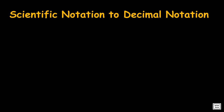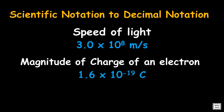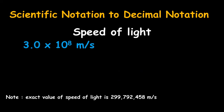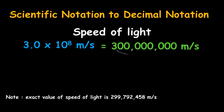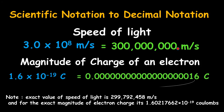Let's try to convert these from scientific notation to decimal notation — the speed of light in vacuum and the magnitude of the charge of the electron. For the speed of light in vacuum, notice that the exponent is positive 8. This means we have to move the decimal point 8 places to the right. For the magnitude of charge of an electron, notice that the exponent is negative 19. This means we have to move the decimal point 19 places to the left.